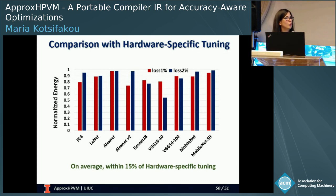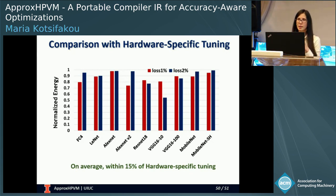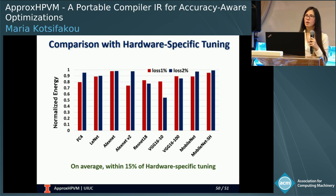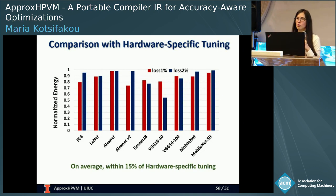We run this experiment for the DNN benchmarks. The Y-axis shows normalized energy: the energy for hardware-agnostic configurations normalized to the energy achieved by hardware-specific configurations. On average, the hardware-agnostic tuning is within 15% of the hardware-specific tuning. There are cases where they are close and cases where they are far off. This typically happens because the hardware-agnostic tuner makes different decisions in one or two tensor operations — when they are close, that layer was not a very important one; when they are far off, the wrong decision happened in the most expensive tensor operation of the whole network.